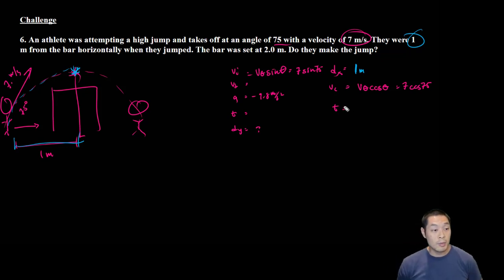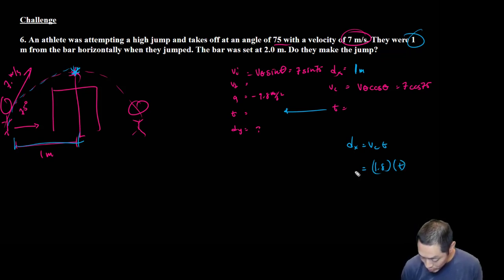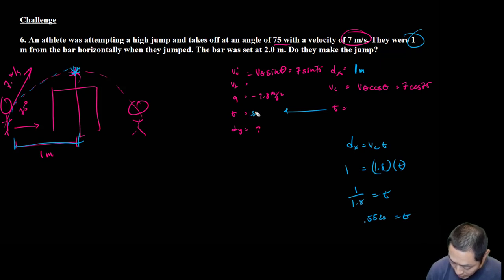dx equals vct. We have vc which is 7 cosine of 75, and I get 1.8 something. On the board I'm going to write this, but I'm going to keep it in my calculator. Time is what we're looking for. We know displacement is 1, so 1 divided by 1.8 equals t. 1 divided by that gives me 0.552 seconds. Now I'm going to plug that back in over here: 0.552 seconds, and then we're going to solve for dy.